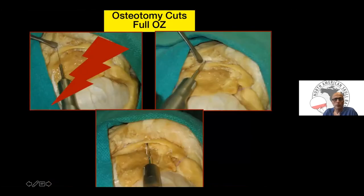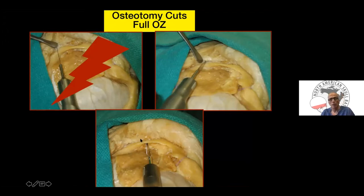These are cuts we don't recommend. You need to be very careful when making the cut at the root of the zygoma — you don't want to enter the temporomandibular joint or external ear canal. Instead, point your reciprocating saw away from the external ear canal and TMJ. Make two cuts, one above and one below, forming an obtuse angle, which also reconstructs better.